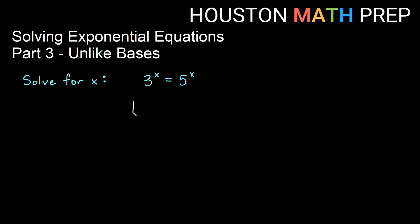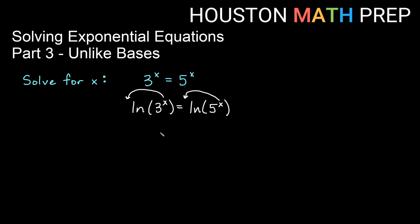So what we'll do is take the natural log of both sides. Neither of these are base e, so it doesn't simplify right away. However, using properties of logarithms — when you have an exponent inside a logarithm you can move that exponent out front multiplying the log — I can take the x inside each logarithm and move it out front. So we get x times ln of 3 equals x times ln of 5.